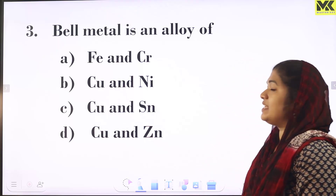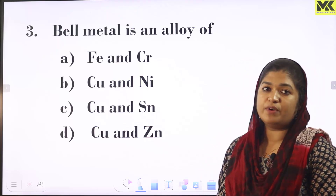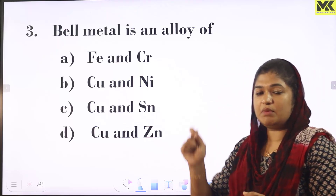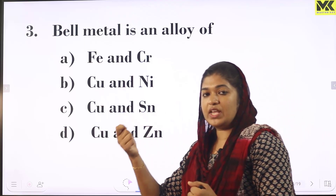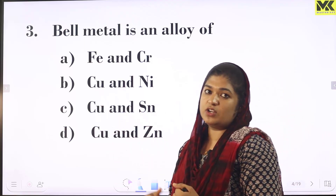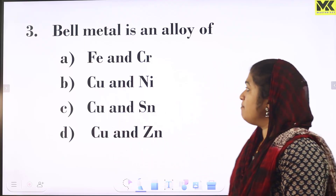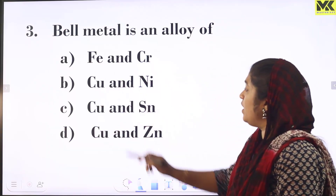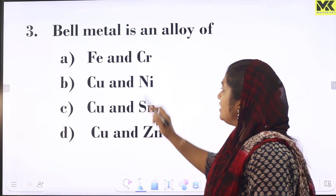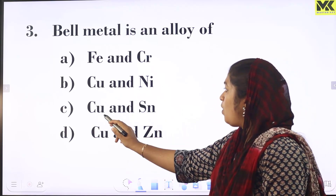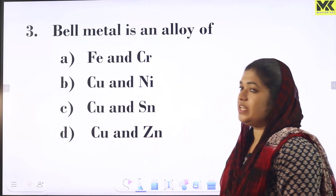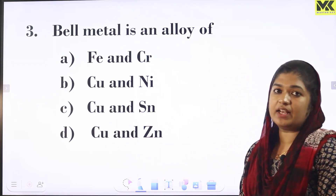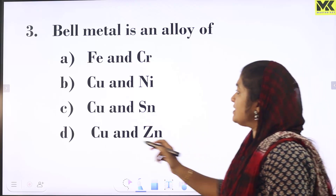Next question: bell metal is an alloy of which elements? The options are iron and chromium, copper and nickel, copper and tin, or copper and zinc. Bell metal is made of copper and tin.